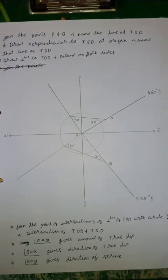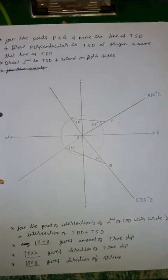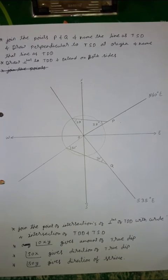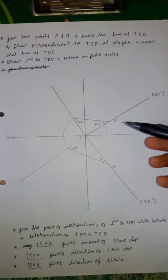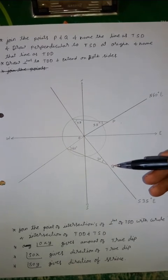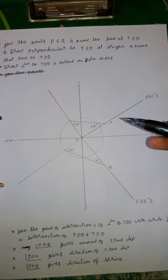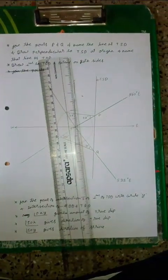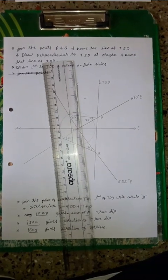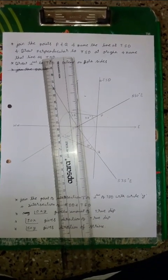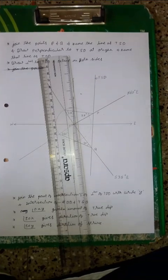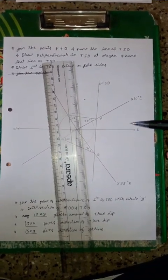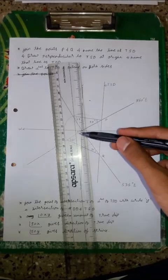The line joining more than two apparent dip lines is called the true strike direction. I have got these two points P and Q. I am going to join these points, which is called the true strike direction. The dip and strike lines are always orthogonal to each other, so I am going to draw a perpendicular line for the true strike direction at the origin.